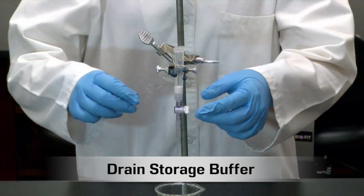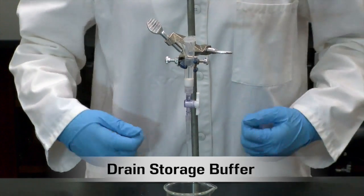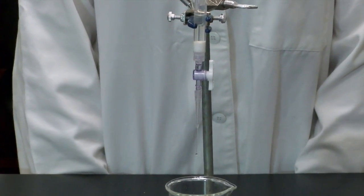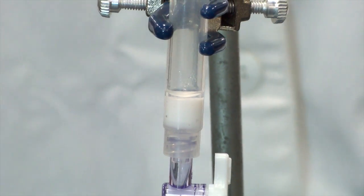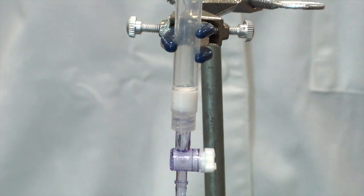One partner should set up and prepare the column on a stand. Turn the stopcock valve into the vertical direction so that the storage buffer can flow into the waste beaker. When the liquid is just above the resin bed, turn the stopcock to the horizontal direction to stop the liquid flow.